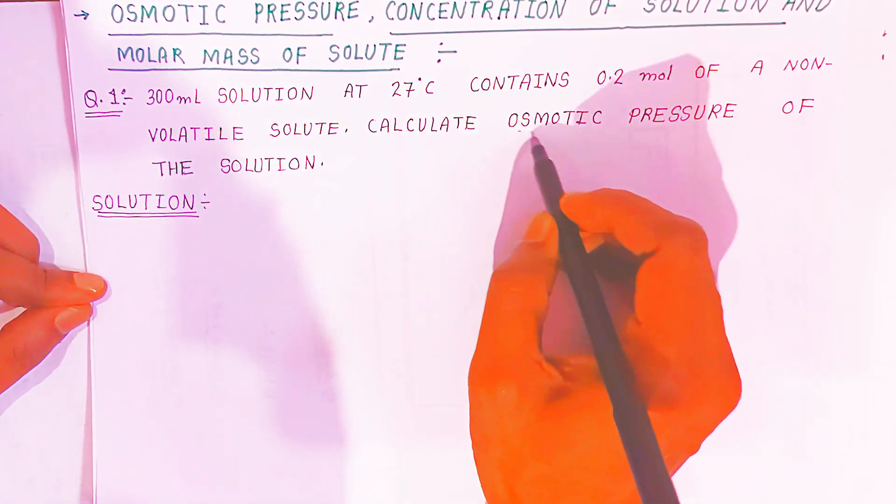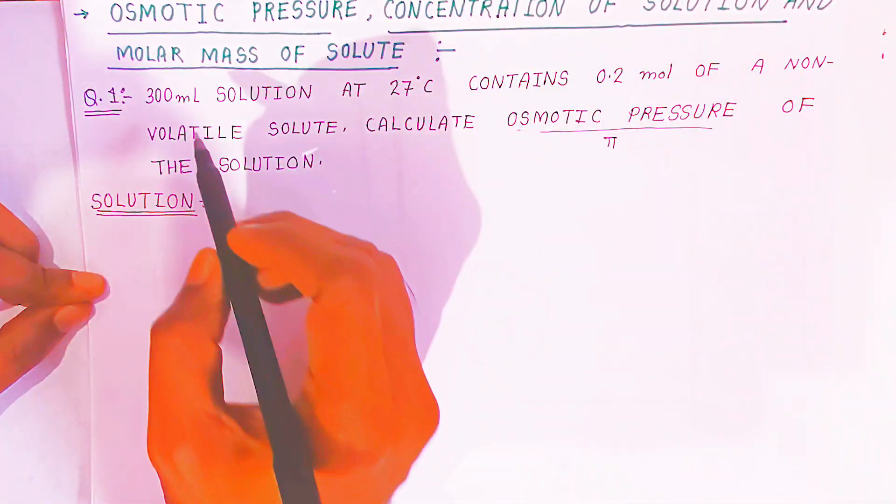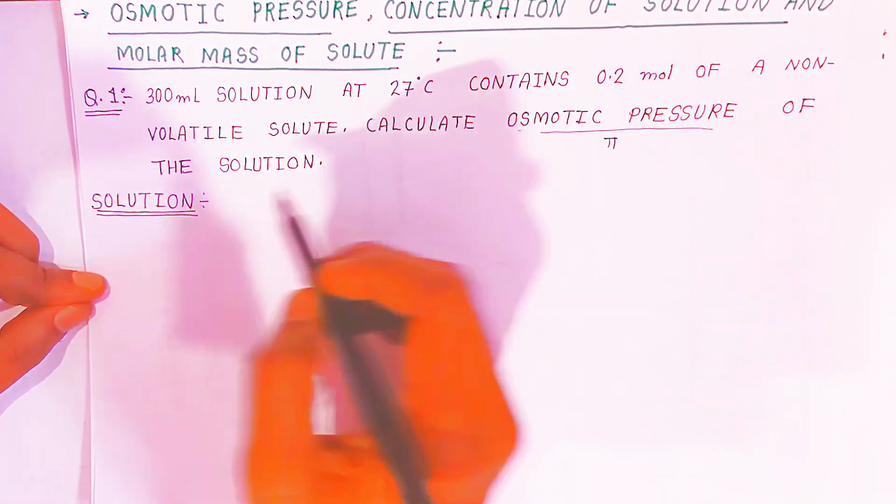We have to find osmotic pressure. The symbol is given π (pi). We are going to calculate osmotic pressure of the solution.